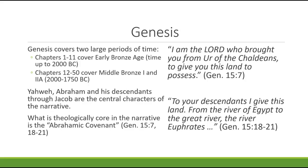What is theologically core in the narrative is what's known as the Abrahamic covenant. You'll find this in Genesis 15:7, a passage I really want students to associate with Genesis. Genesis 15:7 says, 'I am the Lord who brought you from Ur of the Chaldeans.' Ur is an area or region in what would be present-day Iraq — from that area, from the Ur of the Chaldeans, to give you this land, referring to the land of Palestine, to possess.